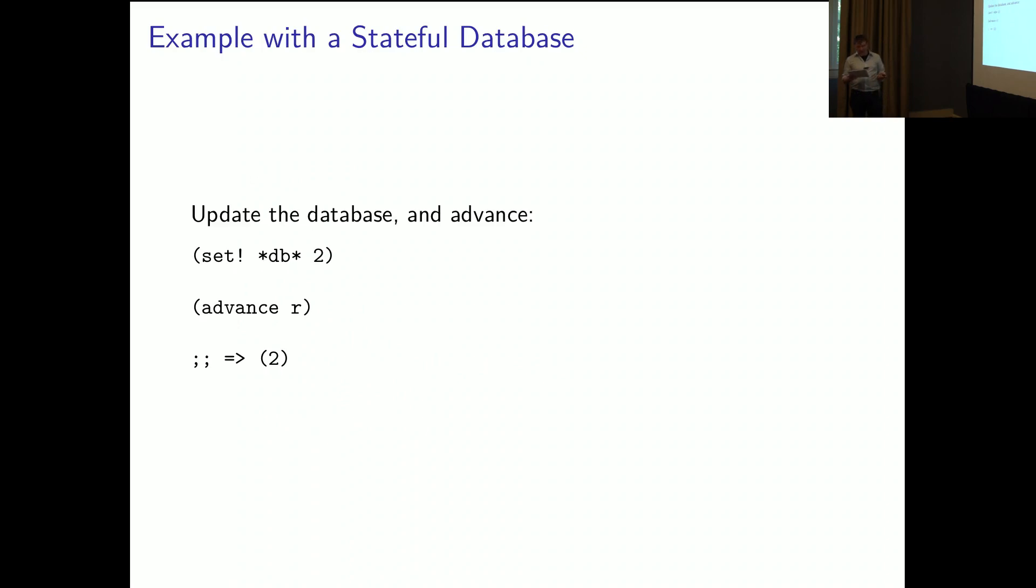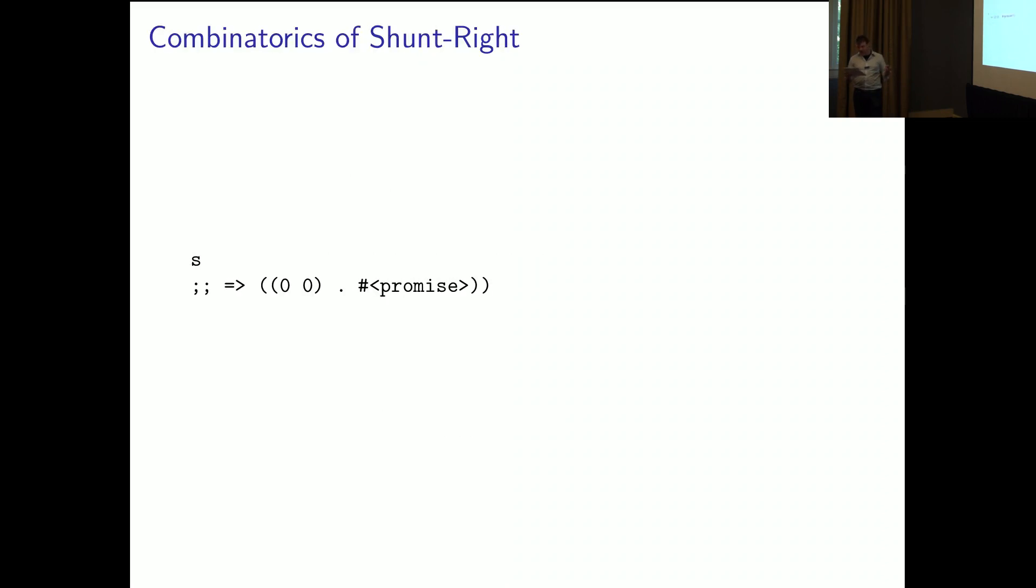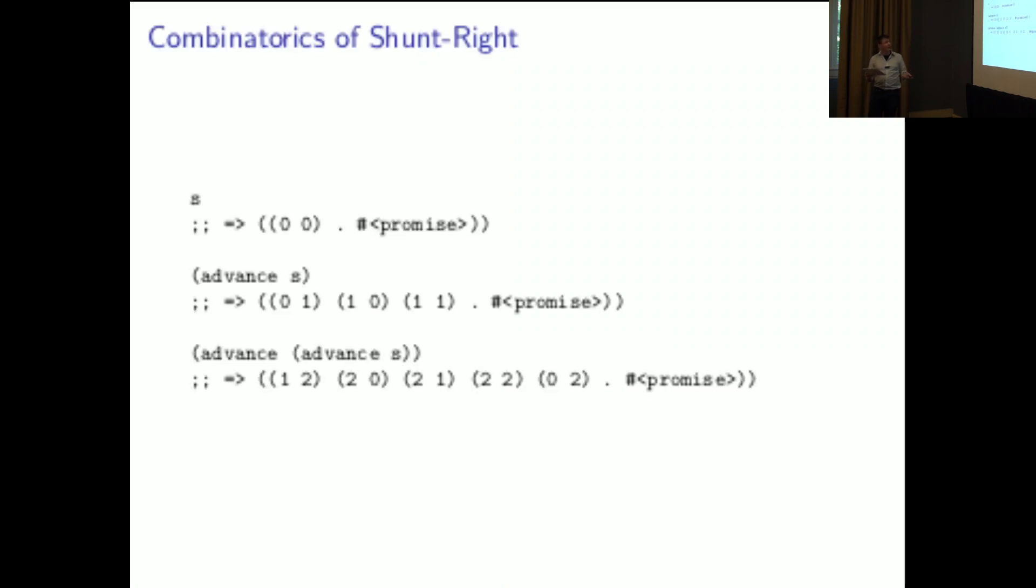We can update the database in advance and the shunt right mechanism turns out to have interesting properties for interleaving search even without referring to a stateful resource. For example, in ordering or grouping solutions as we get from the small example. This INCO recursively generates a now or later type of goal, incrementing its variable at each future point in time. And the program S uses this INCO to generate pairs of such incrementing variables. And as we advance S, we see the solutions are grouped in an increasing order of the maximum value of the two variables.